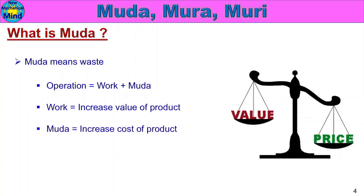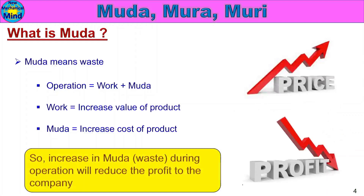Muda is a waste activity. The product cost is increased, but no value improvement is added. This means that Muda is a non-value-added activity. Increase in Muda during operation will reduce the profit to the company. In Muda or waste activity, the cost is increased but the price is also increased, reducing profit.